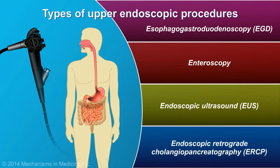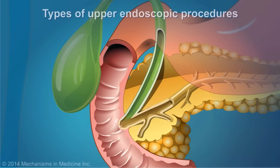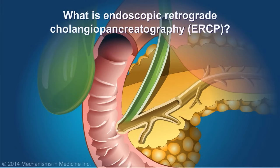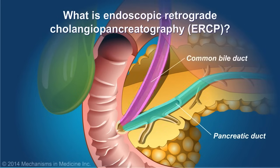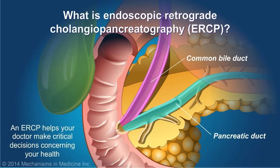Endoscopic retrograde cholangiopancreatography, or ERCP, is an endoscopic procedure used to examine and treat a specific finding within either the pancreatic duct or biliary tree or bile duct. This procedure helps your doctor make critical decisions concerning your health.